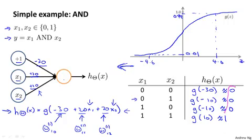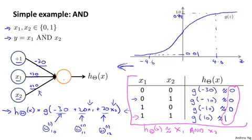And if you look in this column, this is exactly the logical AND function. So this is computing h of x is approximately x1 AND x2. In other words, it outputs 1 if and only if x1 and x2 are both equal to 1. So by writing out our little truth table like this, we manage to figure out what's the logical function that our little neural network computes.